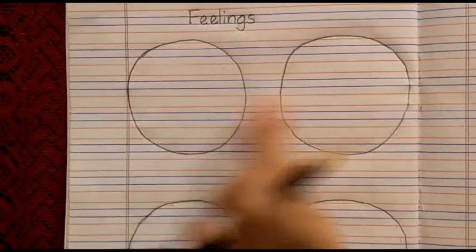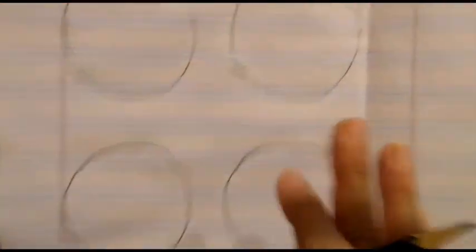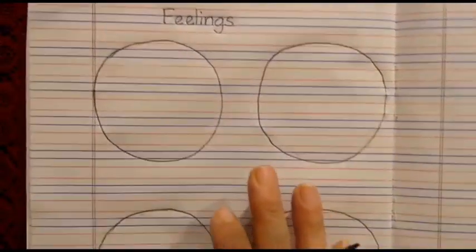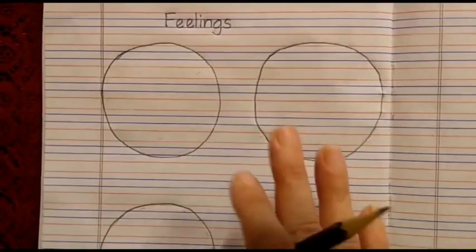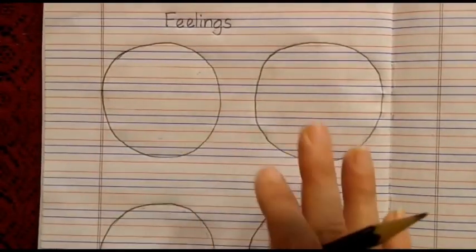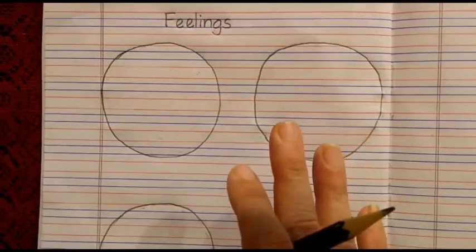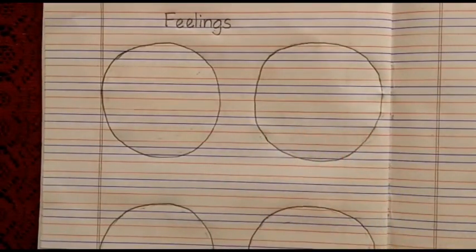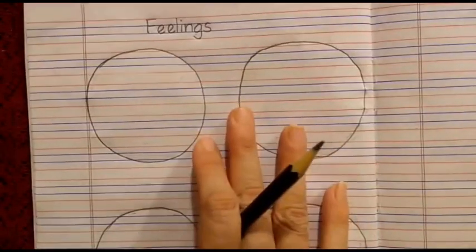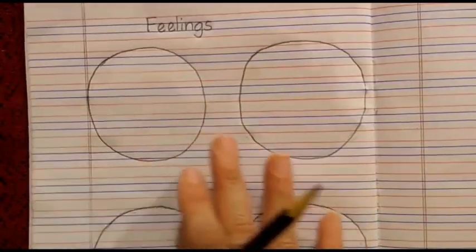This way, first we have to draw 4 circles. You need to draw the way you can. No need to take anyone's help. Whatever you do, that's the best. Okay. One by one, we will draw the feelings and we will name them.